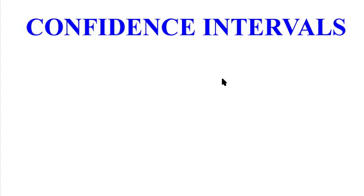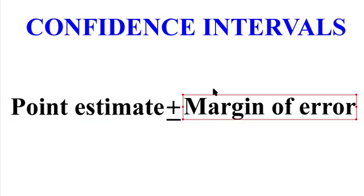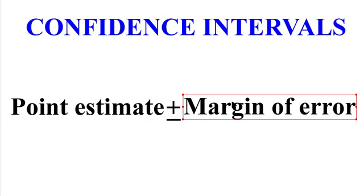If you recall, confidence interval is the point estimate which is the sample mean normally and we're talking about t-tests here. So it's the sample mean plus or minus the margin of error. So it's two numbers. It's the sample mean plus the margin of error, that's the high point, and the sample mean minus the margin of error, that's the low point. So you got this interval, you got this chunk of a number line.